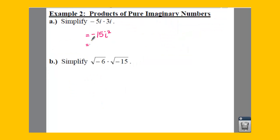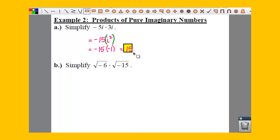So what we can do is take out that i squared and make that negative 1. So we're going to have negative 15 times negative 1. That's going to give us positive 15 after we multiply through. There's example 2A!